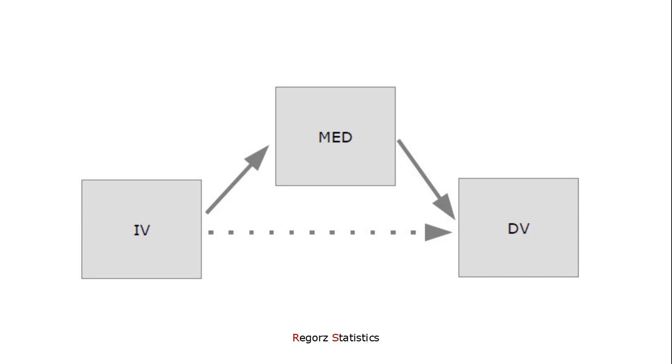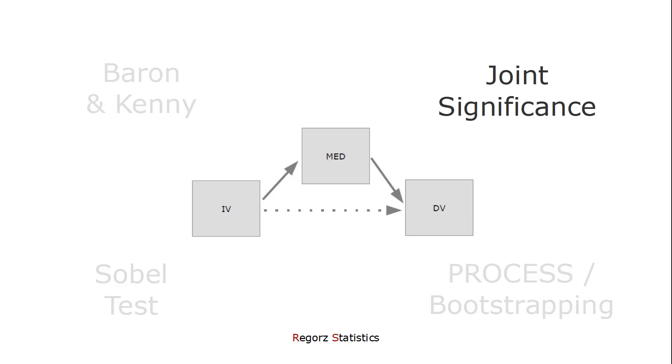The second approach is the joint significance approach. Here only two of the four conditions from Baron and Kenny are used. You look whether you have a significant a path and a significant b path. And if both paths are significant then by the joint significance approach you have mediation.